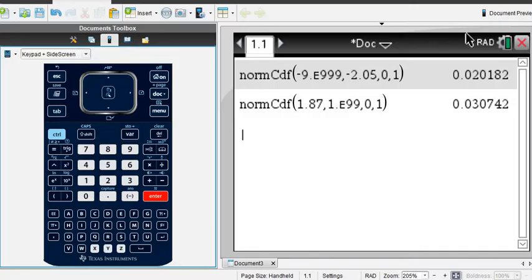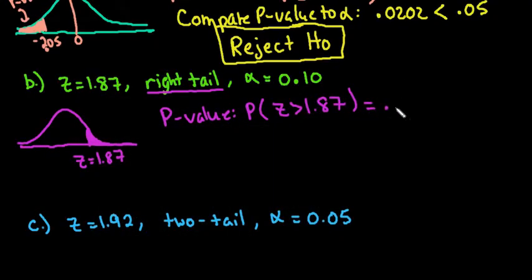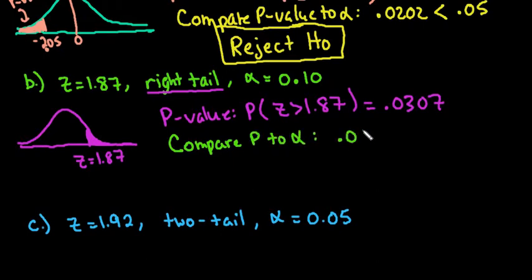I was looking at the wrong place on my paper and got confused for a second, but it's 0.0307. Now we compare our p-value to alpha. We see that 0.0307 compared to 0.10 is also less than, so we would make the same decision. We would reject the null hypothesis.